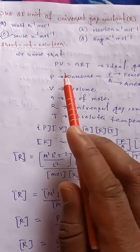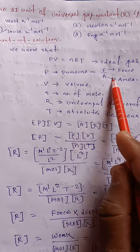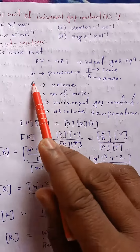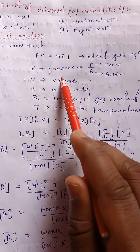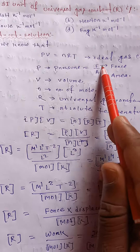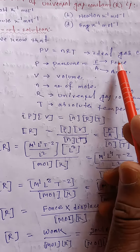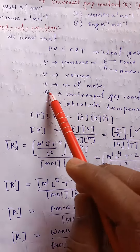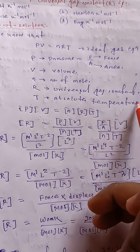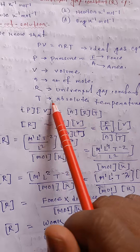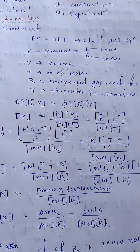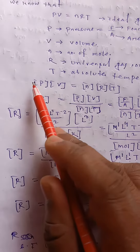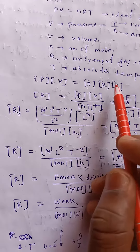We know that PV = nRT — the ideal gas equation. Here P means pressure, also written as force per unit area. V is the volume, n is the number of moles, R is the universal gas constant, and T is the absolute temperature. We will use the dimensional formula to find the SI unit of R.